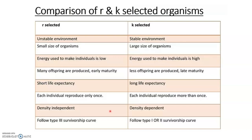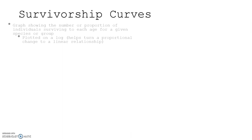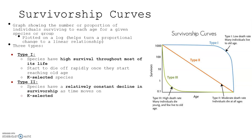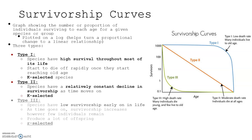Let's look at survivorship curves, characterized as Type 1, Type 2, and Type 3. It's a graph showing the number or proportion of individuals surviving to each age for a given species or group, plotted on log paper, which helps turn the proportional change into a linear relationship. Type 1, for which humans are the example, shows high survival through most of life with rapid die-off at old age — these are K-selected species. Type 2 shows a relatively constant decline in survivorship over time and falls in the middle, with more K-selected qualities than R-selected. Type 3 species have low survivorship early on, with a few individuals surviving as time goes on — examples include acorns from an oak tree, dandelions, and insects. Type 2 examples include mice or birds with a little parental care but not a lot.